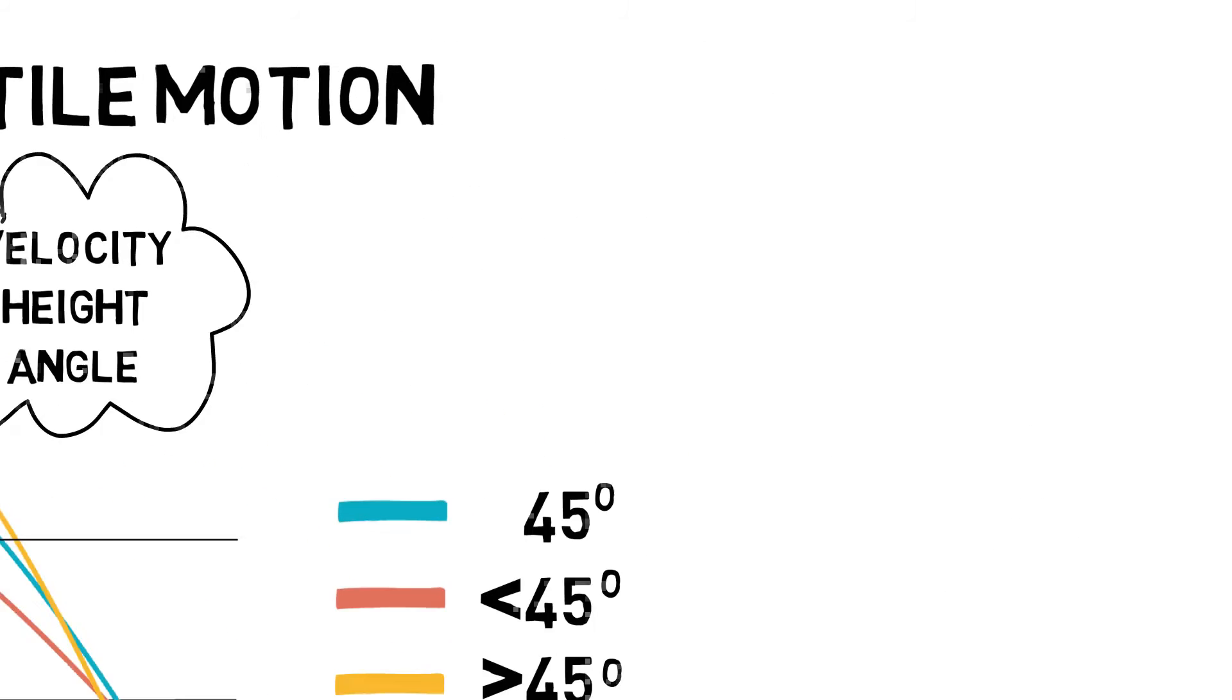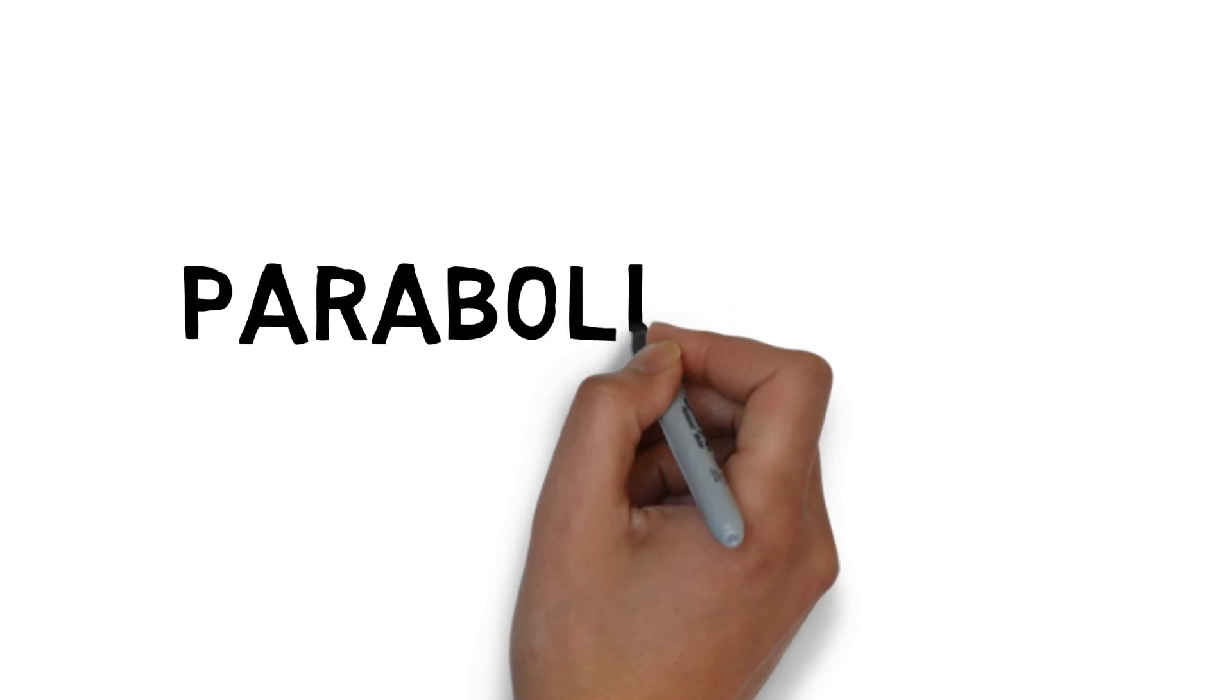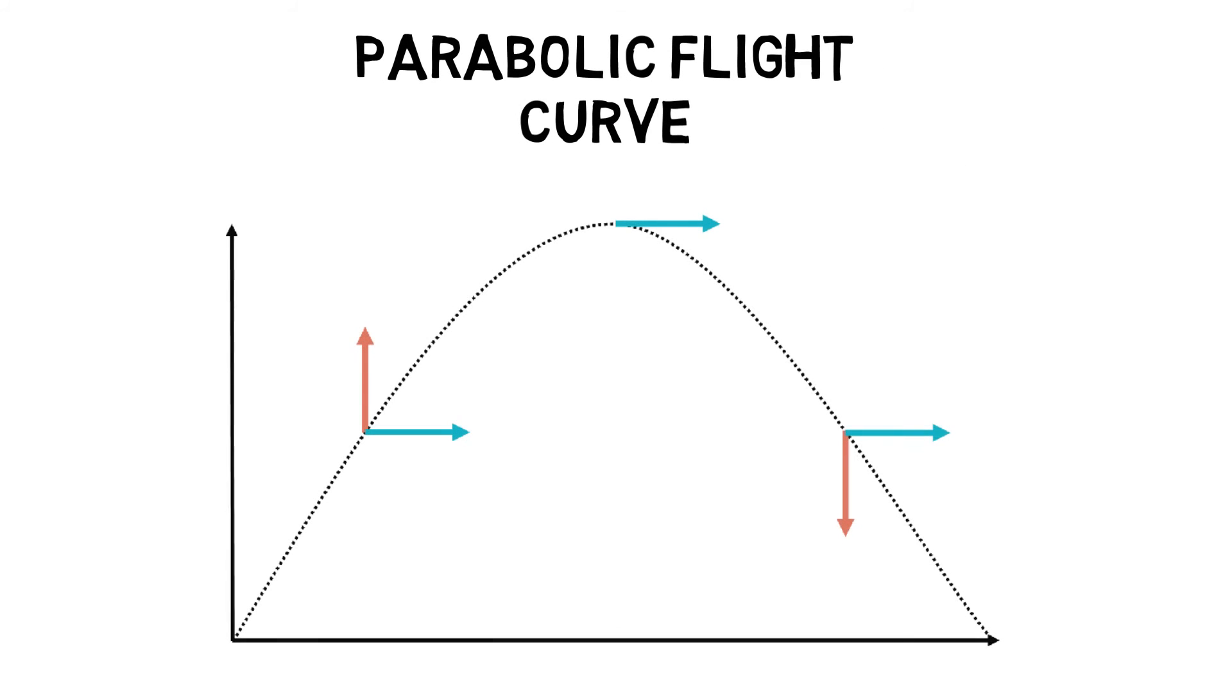A parabolic curve represents a symmetrical flight path. Near the start of the flight there is a large upwards vertical component but a fixed horizontal component. Near the end of the flight there is a large downwards vertical component, and once again there is a fixed horizontal component.